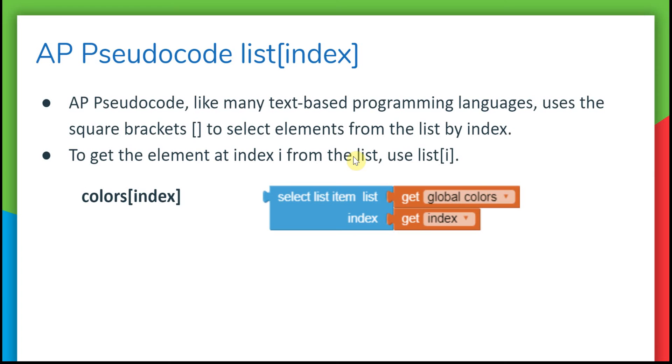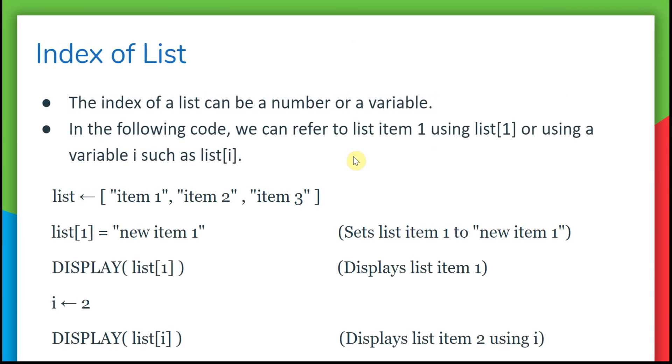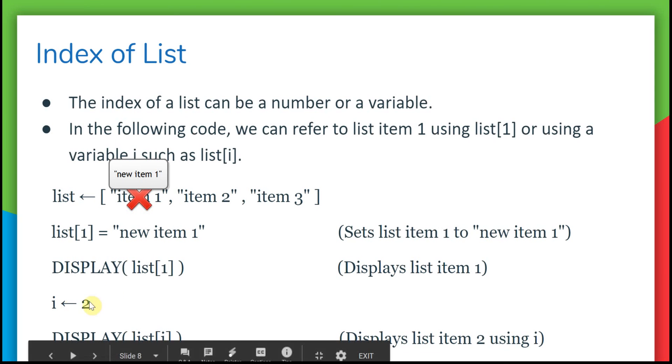Here's a more complicated example using AP Pseudocode. We set up a list with item one, item two, and item three in it. Then immediately, this item number one becomes new item one, so this gets overwritten. Now it becomes new item one, and when we display it, it will print out new item one instead of the old item one.